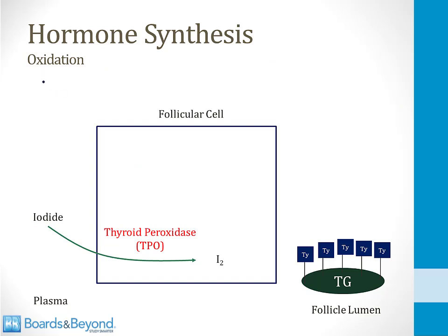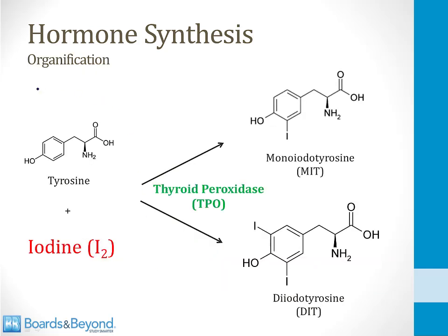Once iodine atoms are inside the cell, the next step is oxidation of iodine to I2. The enzyme that catalyzes this step is thyroid peroxidase, or TPO. This is a multifunctional enzyme that catalyzes many of the steps involved in thyroid hormone synthesis. In addition to oxidation, it also catalyzes the next step — organification — which means adding iodine to the tyrosine residues on thyroglobulin sitting in the follicles of the thyroid gland.